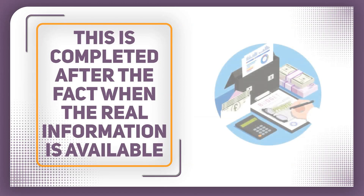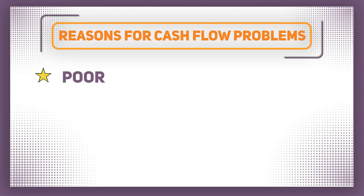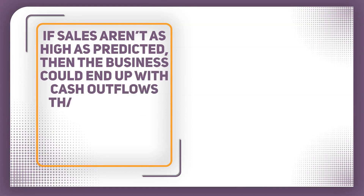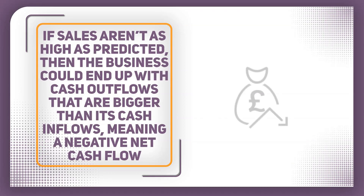This video is all about when things go wrong, so let's have a look at some of the reasons that businesses might end up with cash flow problems. Firstly, poor sales are one of the main causes of cash flow issues. If sales aren't as high as expected then the business could end up with cash outflows that are bigger than its cash inflows, meaning a negative net cash flow. And if this carries on for long enough, the business might end up running out of cash completely and ultimately fail.